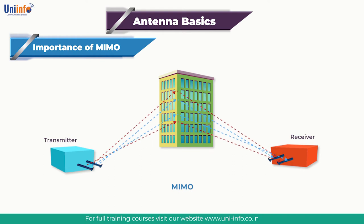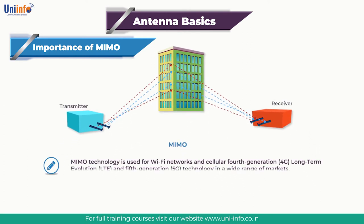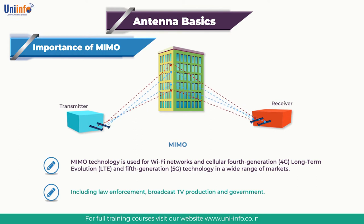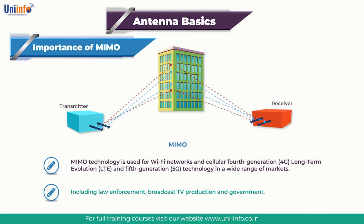The 3rd Generation Partnership Project (3GPP) added MIMO with Release 8 of the Mobile Broadband Standard. MIMO technology is used for Wi-Fi networks and cellular 4G LTE and 5G technology across a wide range of markets, including law enforcement, broadcast TV production, and government. It can also be used in Wireless Local Area Networks and is supported by all wireless products with 802.11n. MIMO is often used for high-bandwidth communication where it is important to avoid interference from microwave or RF systems — for example, by first responders who can't always rely on cell networks during a disaster or when a cell network is overloaded.